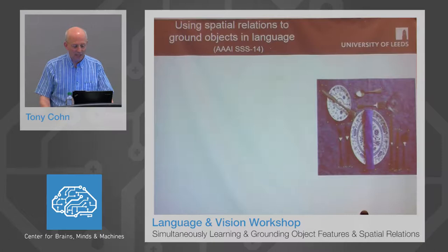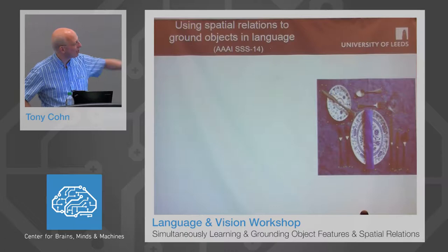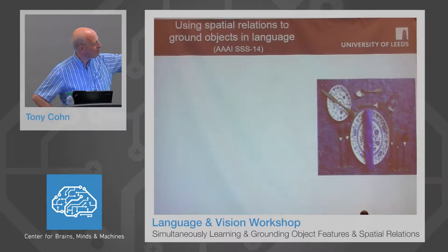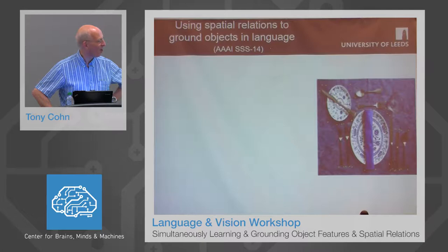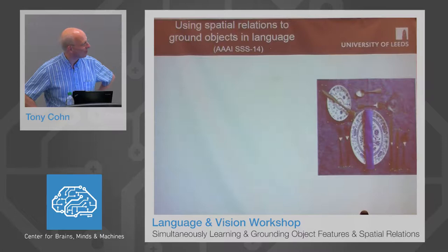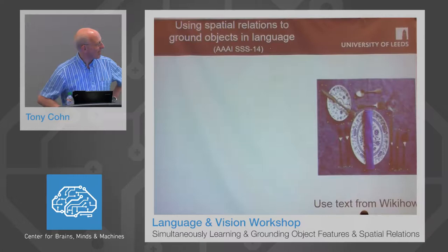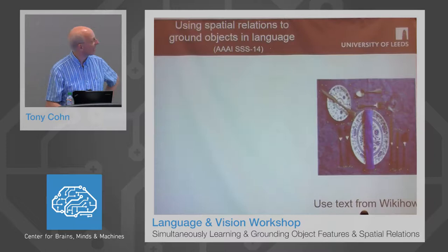Some work which appeared in the AAAI Spring Symposium last year tried to use spatial relationships to ground objects. Supposing you've got a scene such as a place setting on the right, and you've managed to distinguish the different objects on the place setting but you don't know what they are — you don't know that they're called plates, knives, forks, serviettes, and so forth — but you've got bounding boxes for each of those. Suppose we then go to WikiHow and get a description of how to set a place setting.